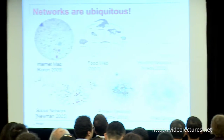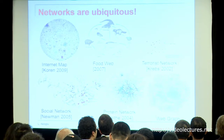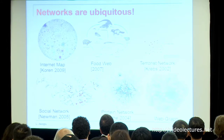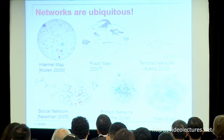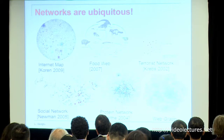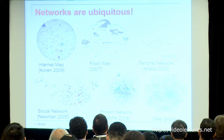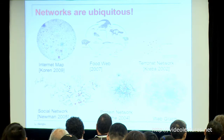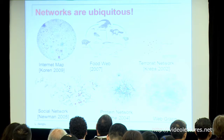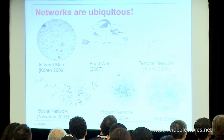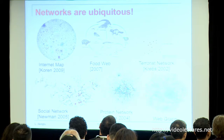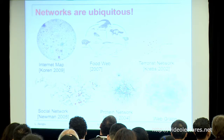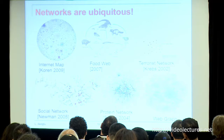We know that networks are everywhere, and that's because a lot of natural phenomena can be represented as a graph, such as the who-eats-whom network, the interactions between proteins, the interactions between social beings, as well as man-made phenomena such as the hyperlinks between web pages, or the links between autonomous systems, and so on.